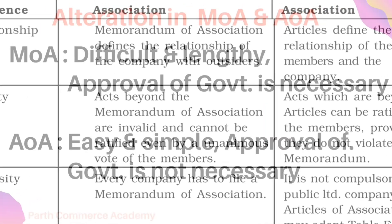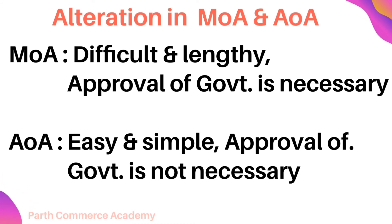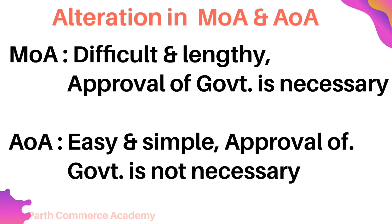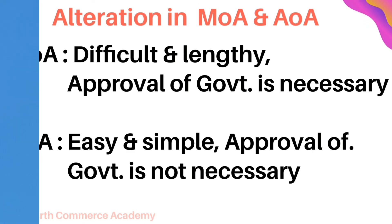From the alteration point of view, it is a very difficult and lengthy process to alter the Memorandum of Association, and it also requires the approval of the government. In the case of Articles of Association, changes are very easy and simple, and approval of the government is not necessary.